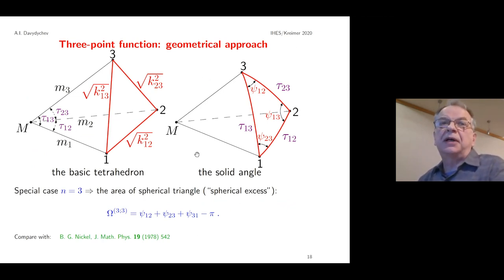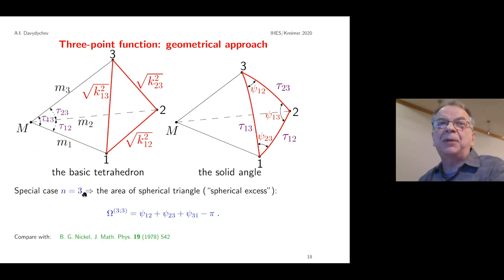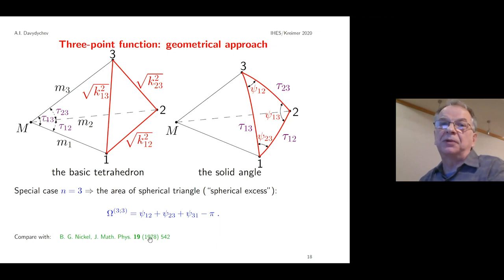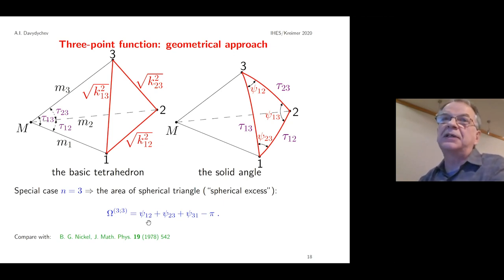For the three-point case, remember the special case where spacetime dimension equals the number of external legs. In this special case, the Feynman integral equals just the area of a spherical triangle, which is the spherical excess: the sum of dihedral angles χ minus π. This result reproduces the result obtained by Bernie Nickel in 1978.